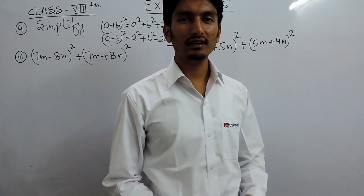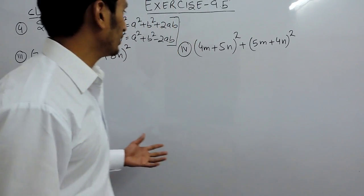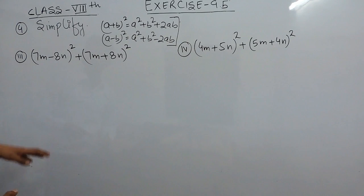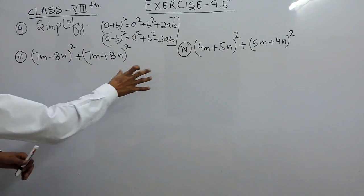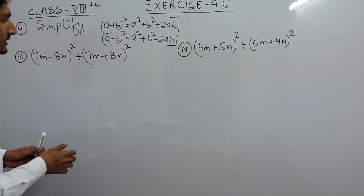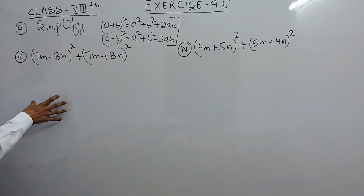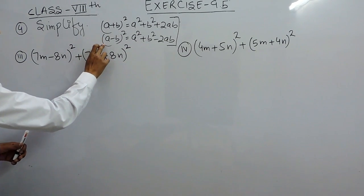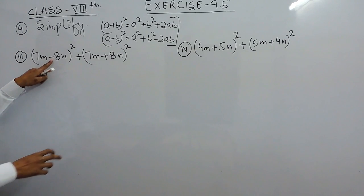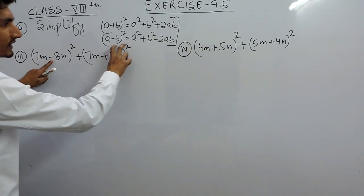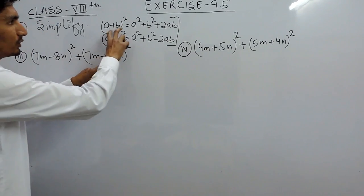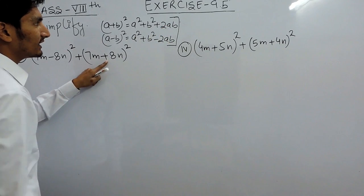Hello everyone. In this video we are going to solve the third and the fourth part of question number four. We are going to simplify these expressions using two identities — whenever there is a negative sign we'll use the identity for the minus sign, and whenever the sign is positive we'll use the identity for the plus sign.